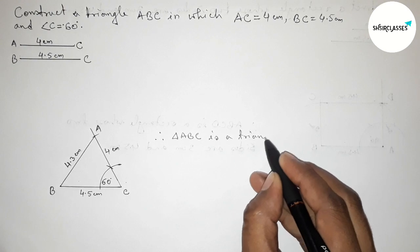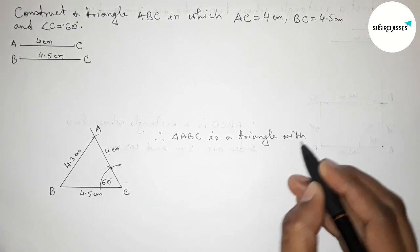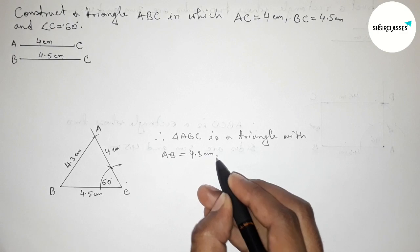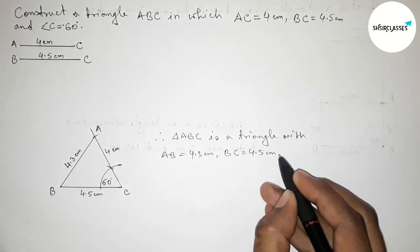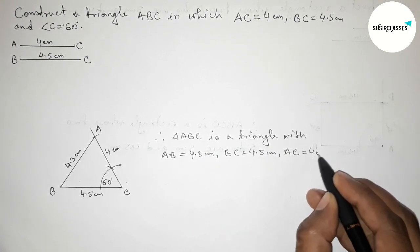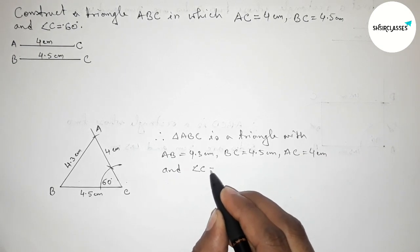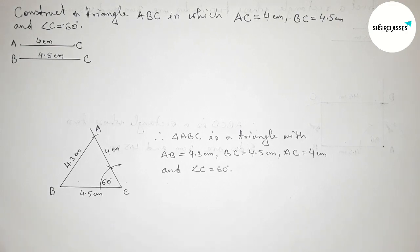Therefore, triangle ABC is constructed with AB equals 4.3 centimeter approximately, BC equals 4.5 centimeter, AC equals 4 centimeter, and angle C equals 60 degrees. That's all. Thanks for watching — if this video is helpful to you, please share it with your friends.